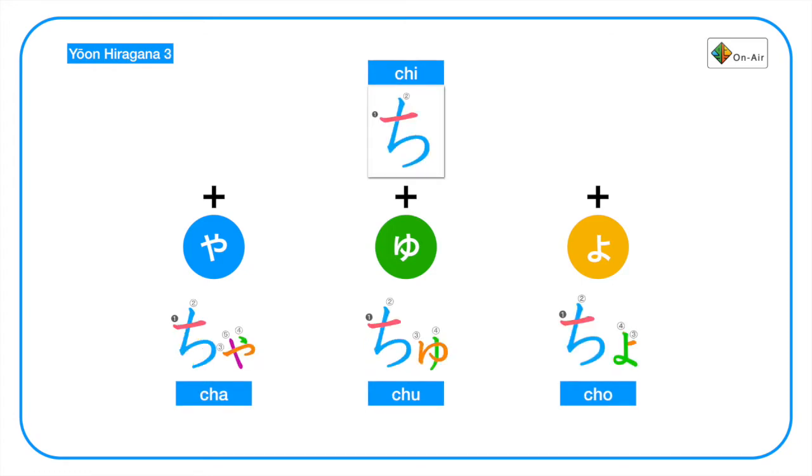Next we have chi plus ya, yu, yo, which becomes cha, chu, cho. Again, cha, chu, cho.